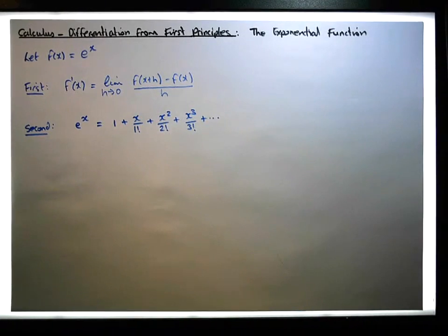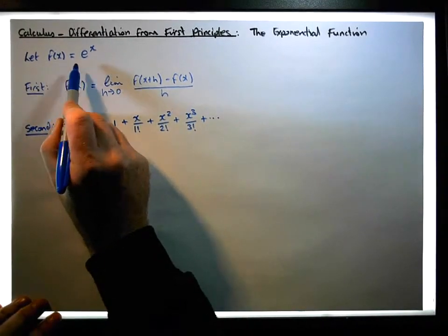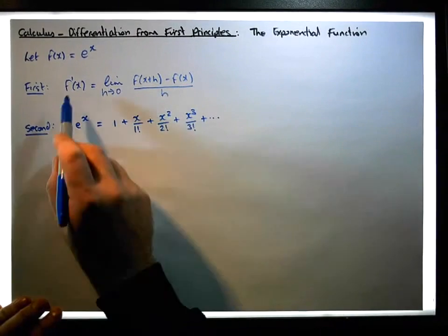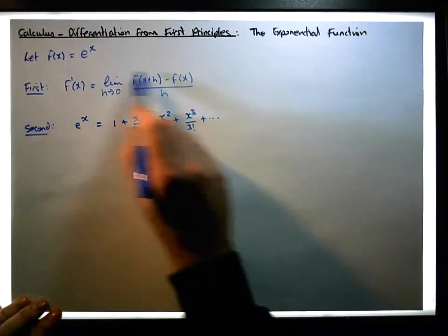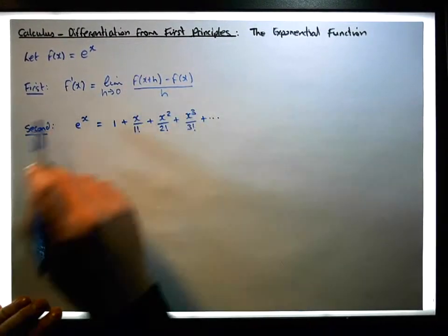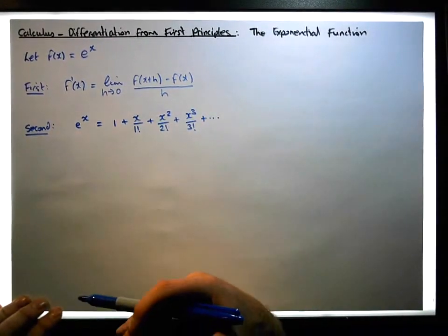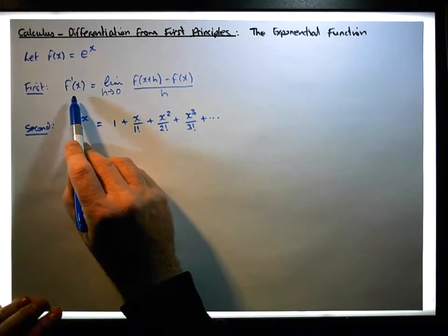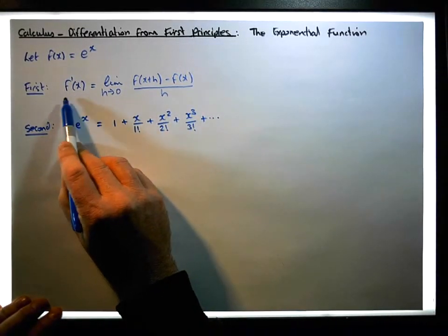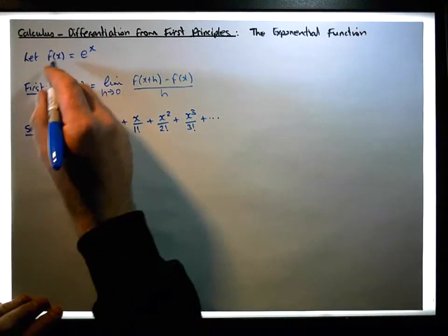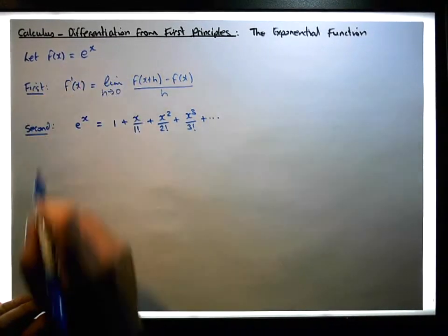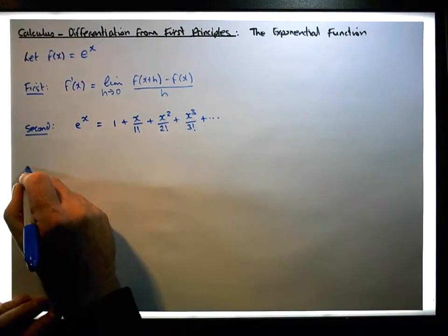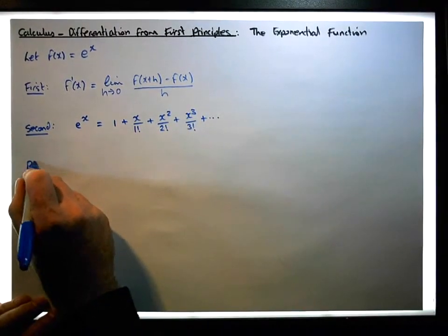So let's get started. We know that f of x is equal to e to the x. Let's apply the definition of what a derivative is and see what that evaluates to, because at the end of the derivation we'll have f prime of x. So here's our proof.